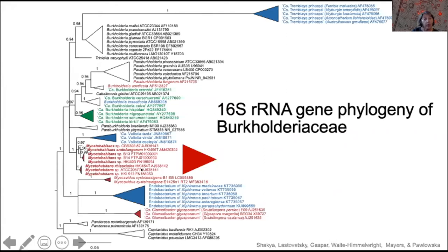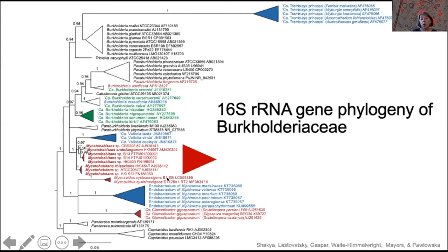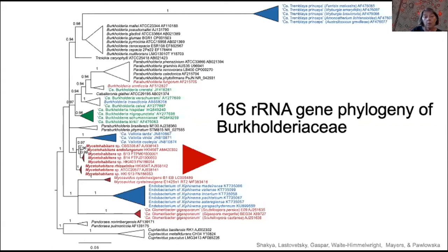The phylogeny of Burkholderia reveals several different species of bacteria associated with various hosts. Mycetohabitans is here, and along with mycetohabitans, Burkholderia is home for mycoavidus — Greg will talk about this. There are also many symbiotic associates of plants and animals.